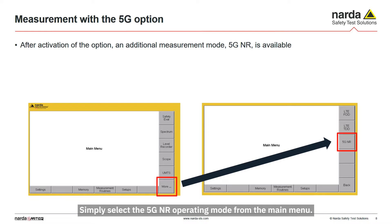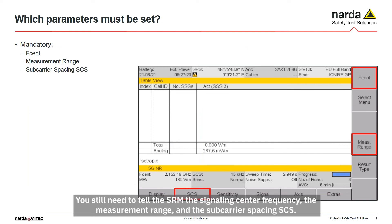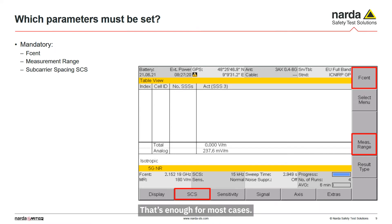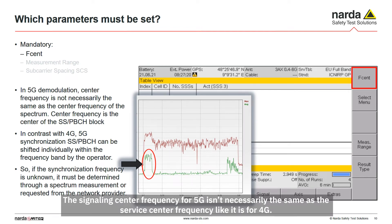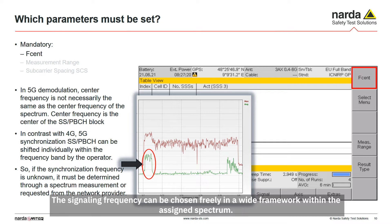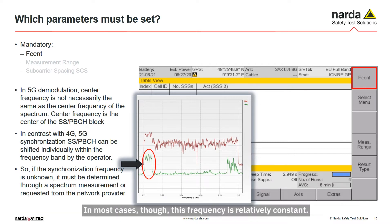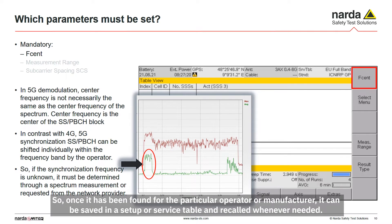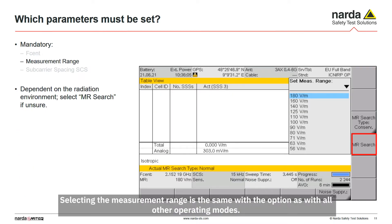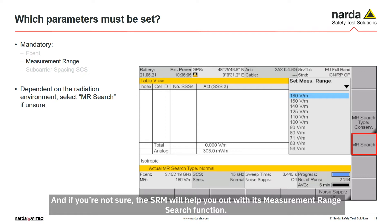Simply select the 5G New Radio operating mode from the main menu. You still need to tell the SRM the signaling center frequency, the measurement range, and the subcarrier spacing SCS — that's enough for most cases. The signaling center frequency for 5G isn't necessarily the same as the service center frequency like it is for 4G; it can be chosen freely within a wide framework of the assigned spectrum. For example, in this measurement screen the signaling is at the lower end of the frequency band. In most cases this frequency is relatively constant, so once found for a particular operator or manufacturer, it can be saved in a setup or service table and recalled whenever needed. Selecting the measurement range works the same as with all other operating modes, and if unsure, the SRM will help with a measurement range search function.